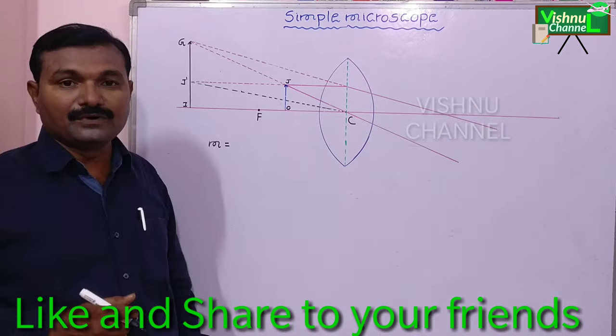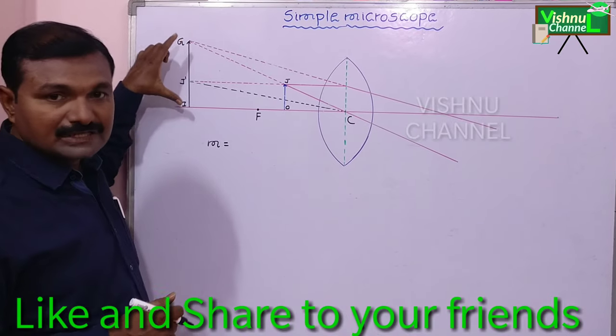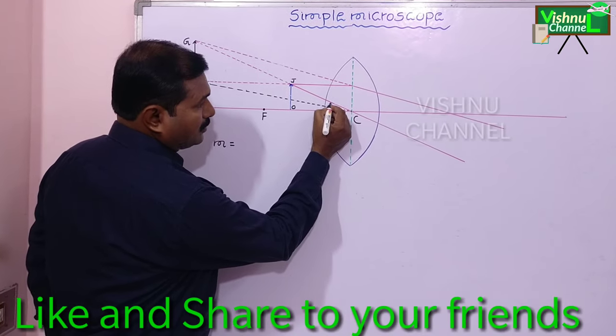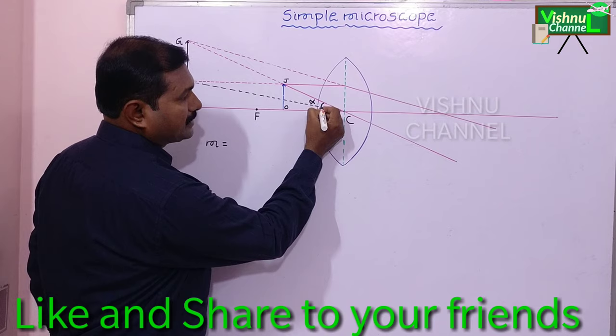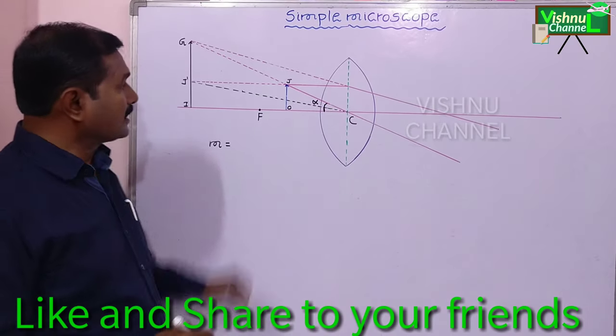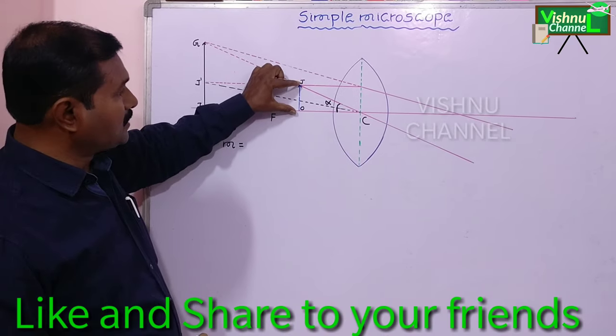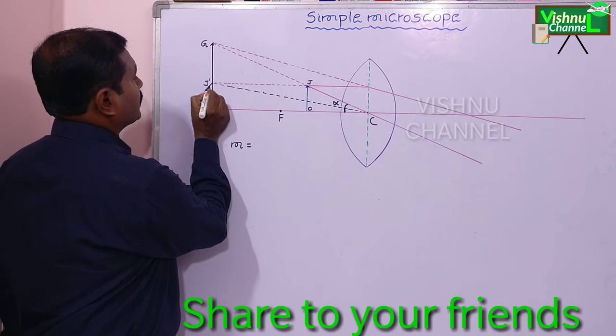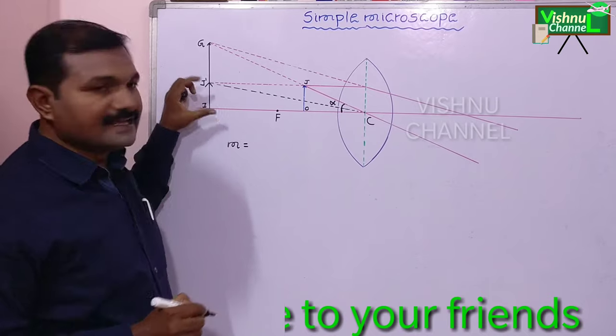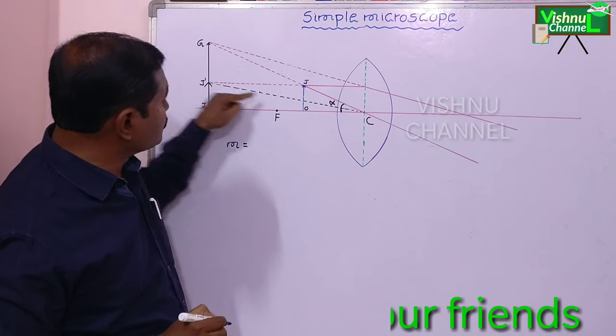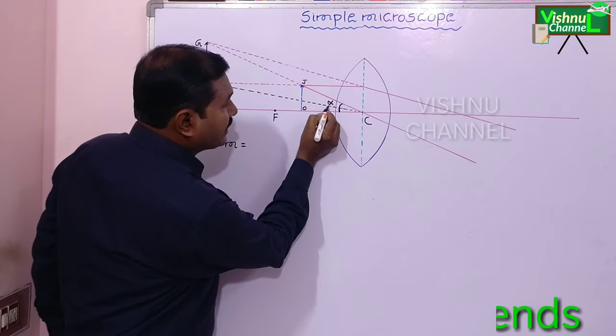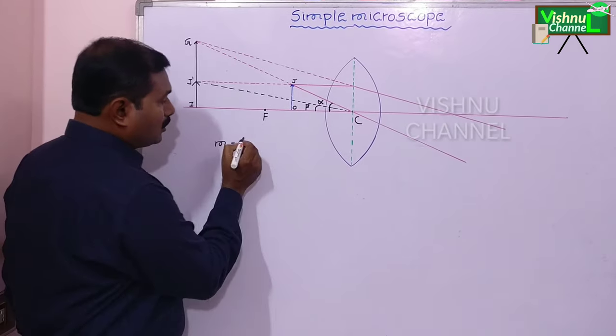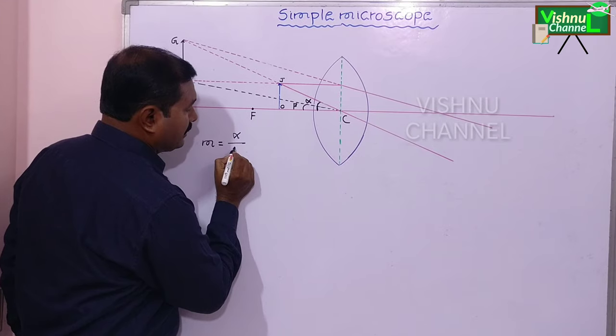Magnifying power. So here we have an image. This image will be alpha. It makes an angle alpha. But object, this object size will be change. IJS is object. This object is beta. So magnifying power m is equal to alpha by beta.